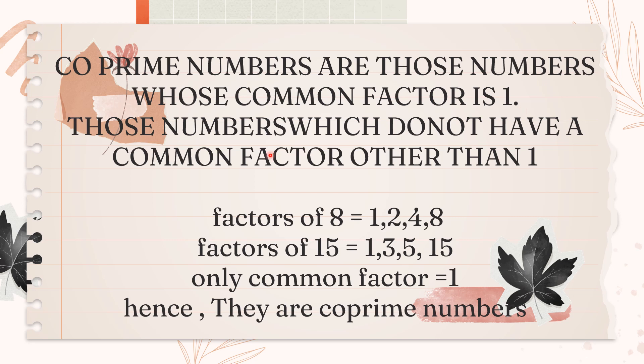In another way, we can define co-prime numbers as those numbers which do not have a common factor other than 1. There is no common factor between these two numbers. For example,